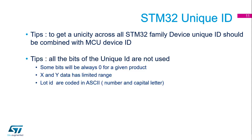The second tip is based on our experience at support level. We received many requests: 'I would like to shrink this unique ID and ensure it's still unique.' In fact, there are some bits that are always at zero for a given product. X and Y data has a limited range, and lot ID are coded in ASCII — so numbers and capital letters. That means we can decrease the size of this unique ID, or I think it's possible. We will see in the hands-on how we can proceed.